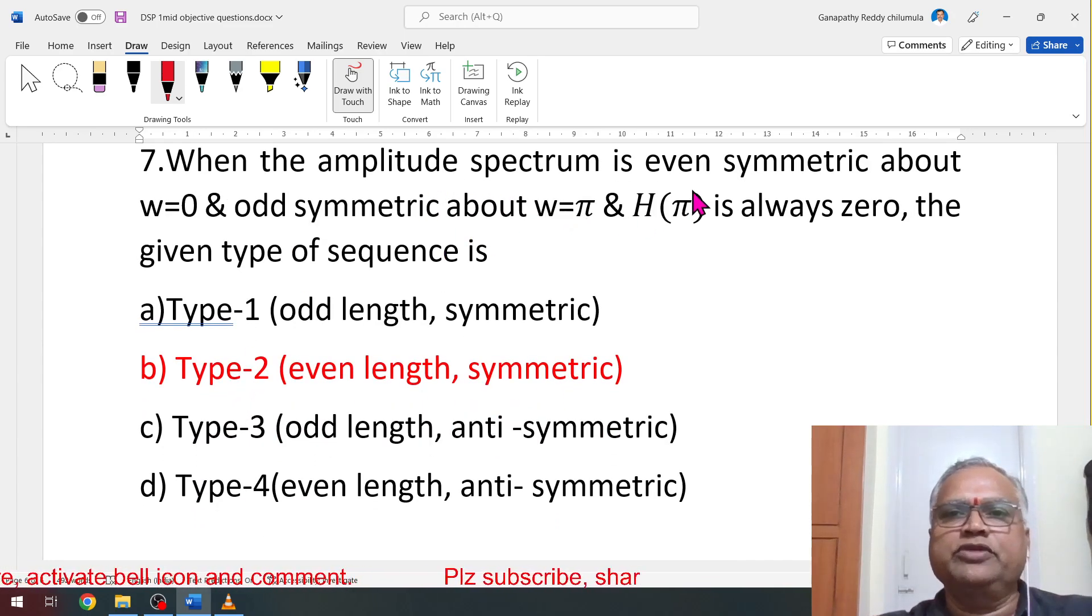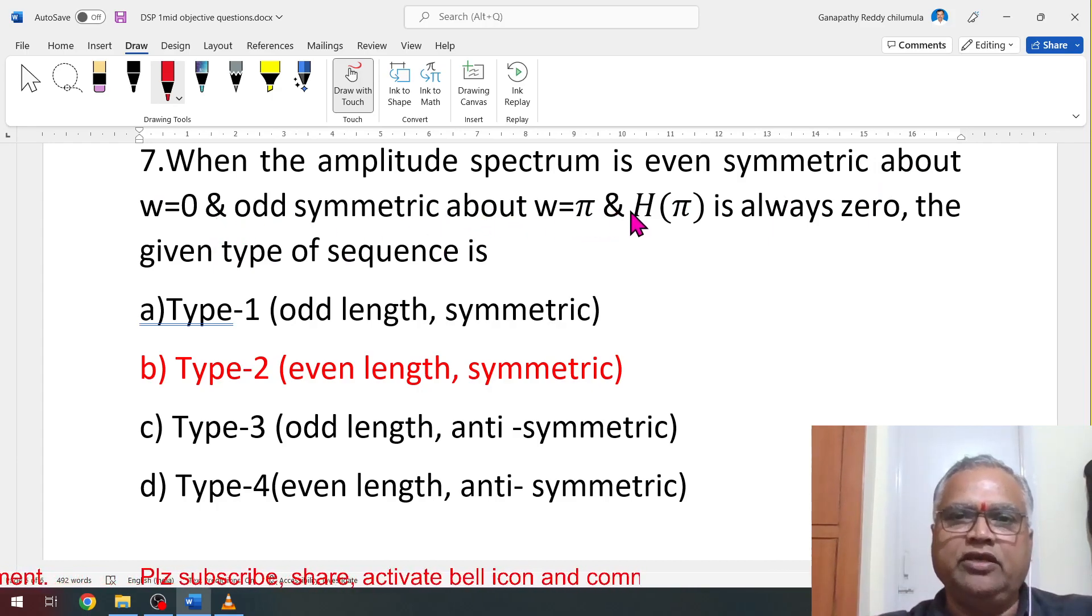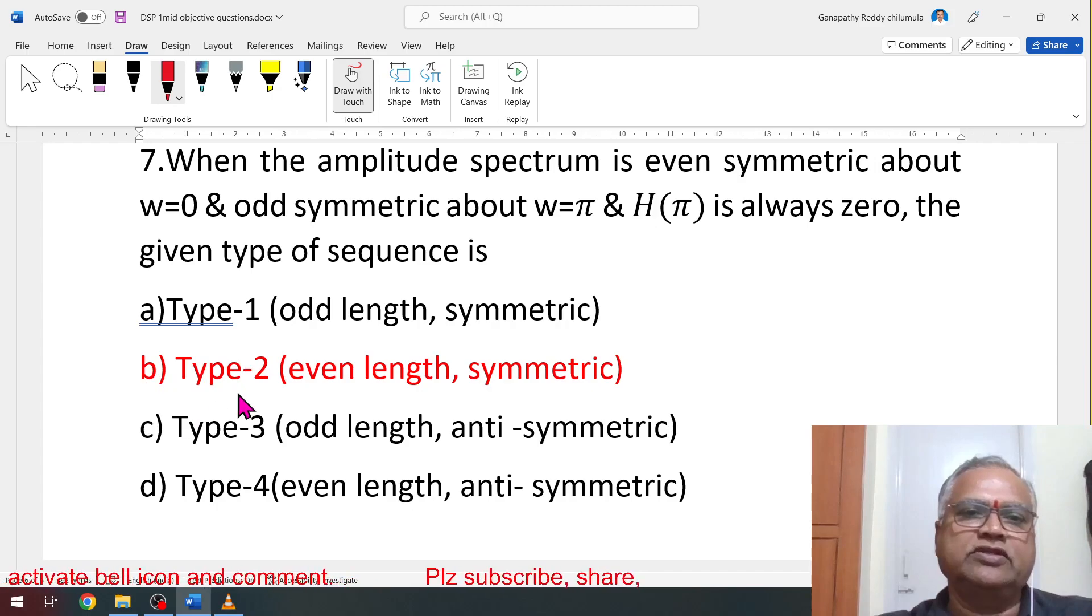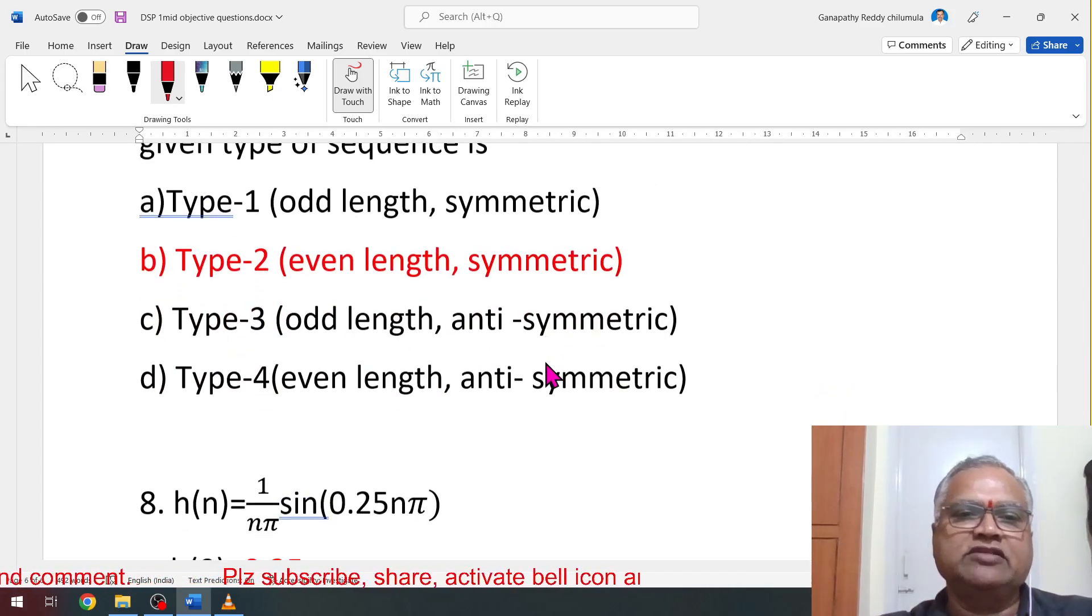When the amplitude spectrum is even symmetric about ω equal to 0, odd symmetric about ω equal to π and H(π) is always 0, the given type of sequence. These conclusions already discussed, it will satisfy type 2. Type 2 means even length and symmetric.